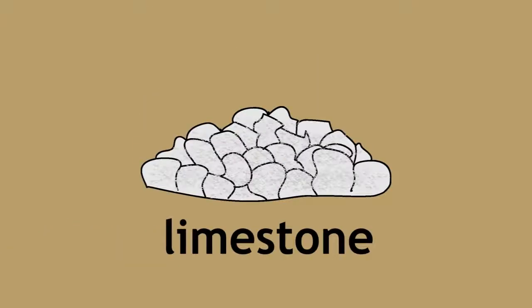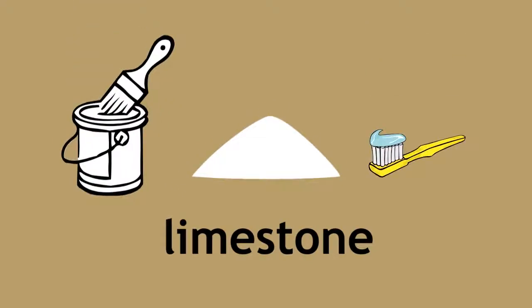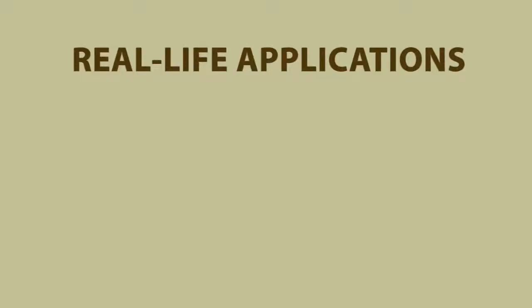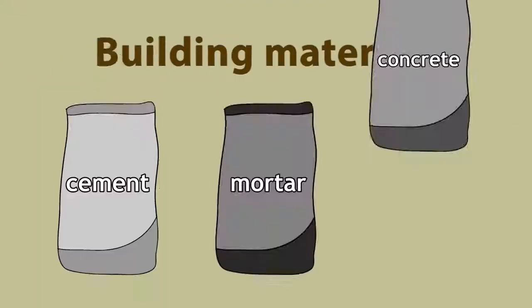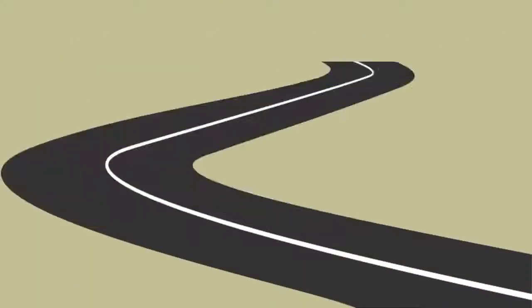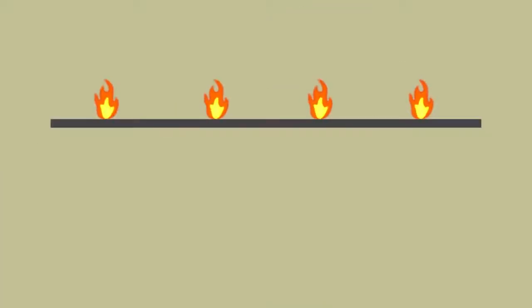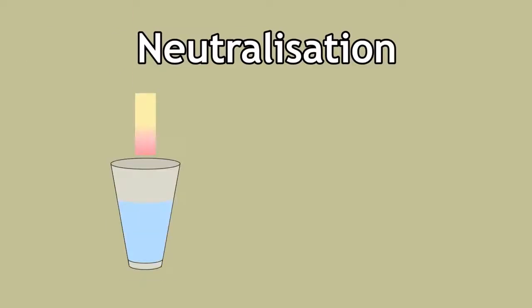Finally, as limestone is white, it can be crushed into a powder and used in paints and toothpaste as a colouring agent. In summary, there are many real-life applications and usages for limestone, including but not limited to construction materials. Limestone can be used to help pave roads, and used as a component in the formation of certain types of glass, and even to neutralize acidic waters and soils.